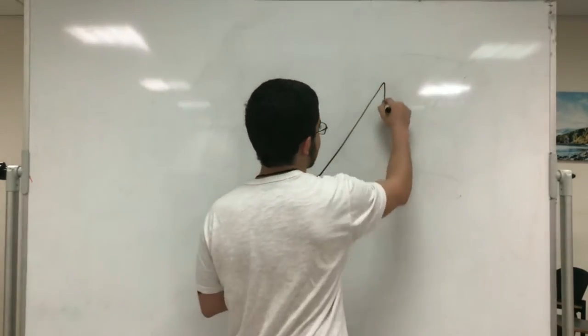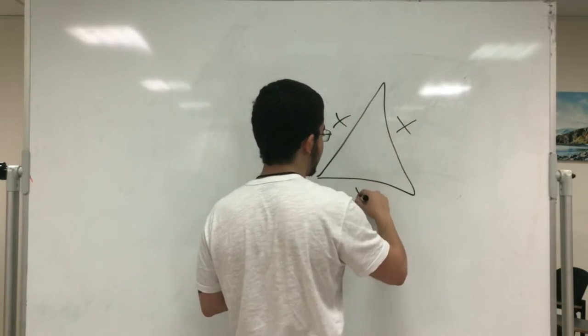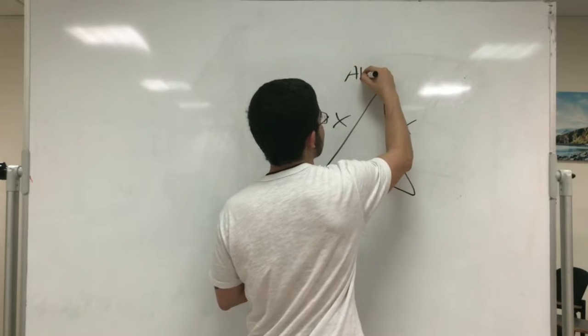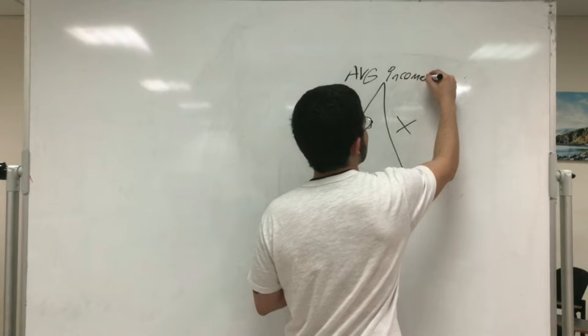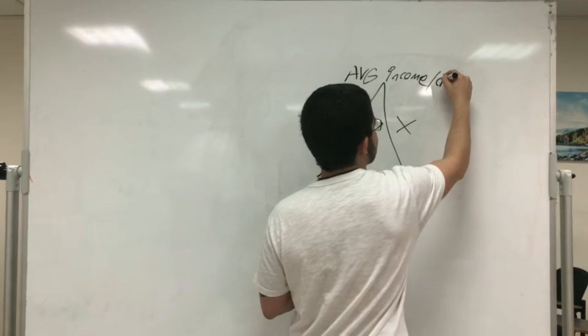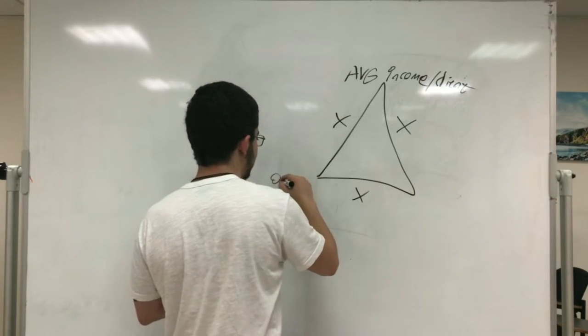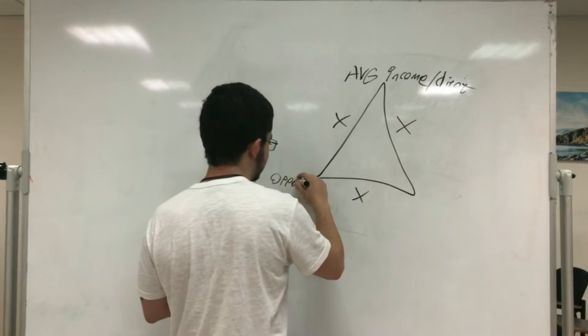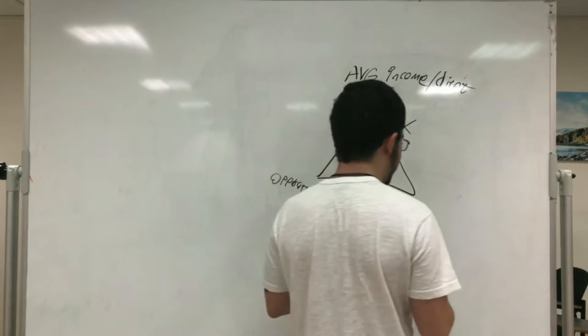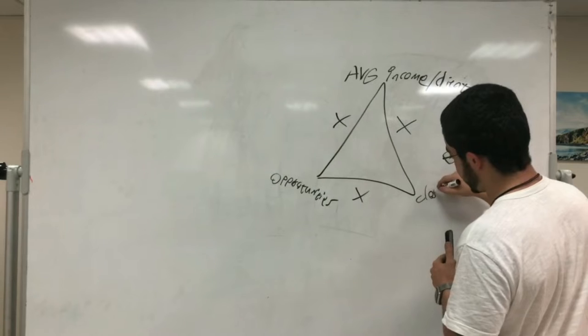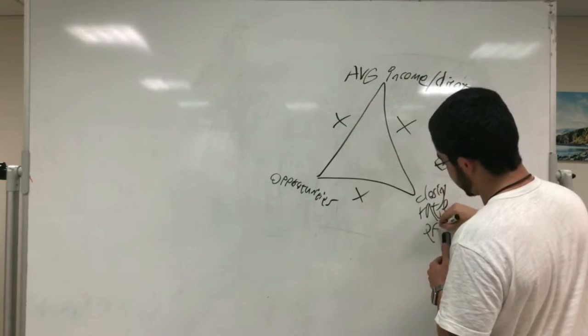We're going to call this the three business multipliers. So you have a triangle with three multipliers: average income per client, opportunities, and closing rate or effectiveness.